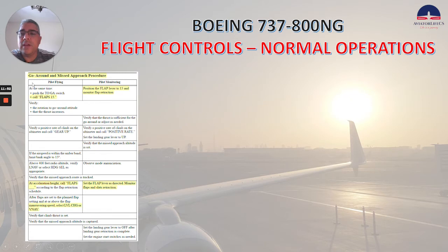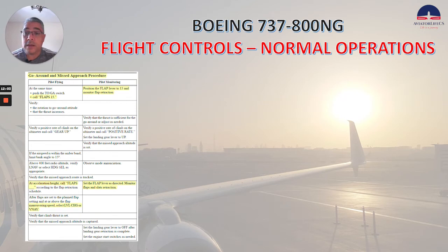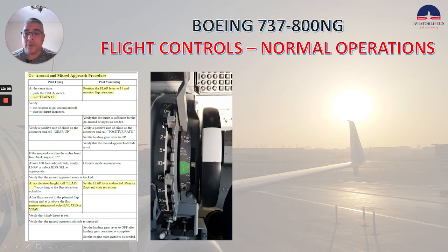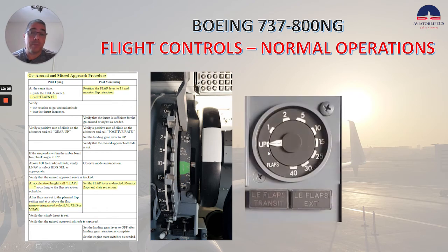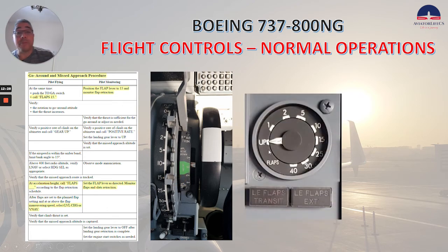Now let's review the go around and missed approach procedure — remember we are talking about normal operations, two engines. Go around: select flap 15, then position the flap lever to 15 and monitor flap retraction. And as we discussed, there are two gates that prevent selecting flaps beyond the go around flap — at flap 15 and flap 1. So after the go around we go to flap 15 and then monitor the flap retraction.